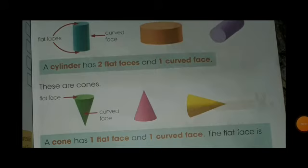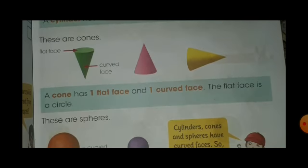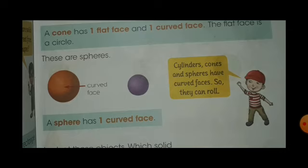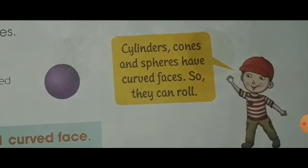These are cylinders. A cylinder has two flat faces and one curved face. These are cones. A cone has one flat face and one curved face; the flat face is a circle. These are spheres — a sphere is just like a ball and has one curved face. Cylinders, cones, and spheres have curved faces, so they can roll.